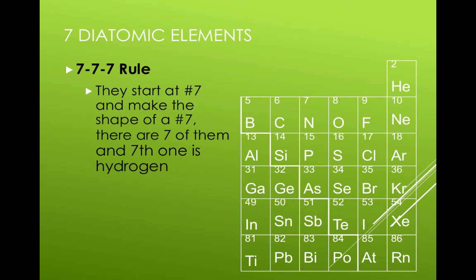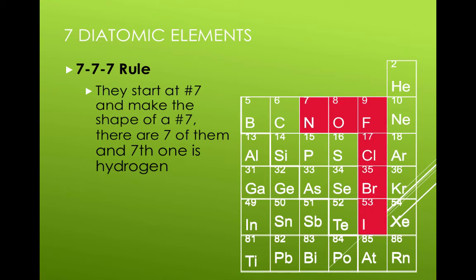So we begin at nitrogen, that's element number seven, that's the first one. Then two, three, four, five, six, and the seventh one is hydrogen. Another memory tool is the saying,